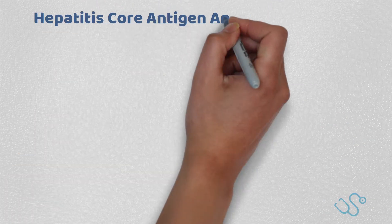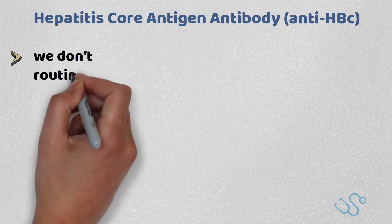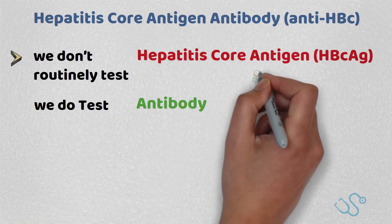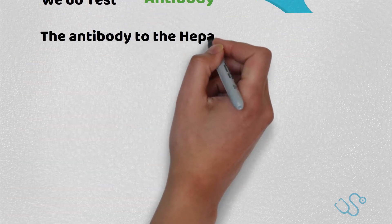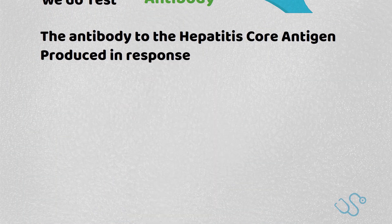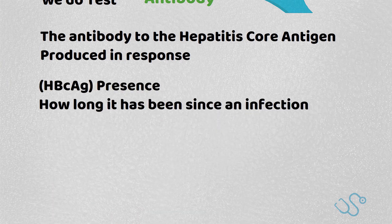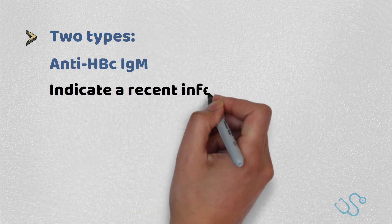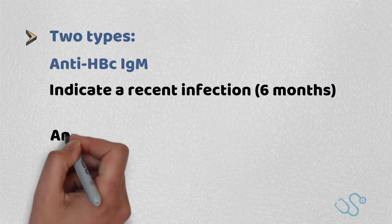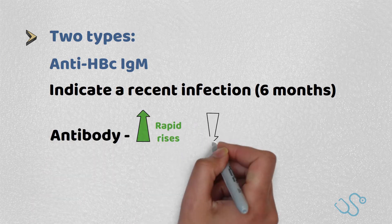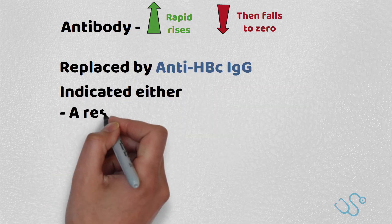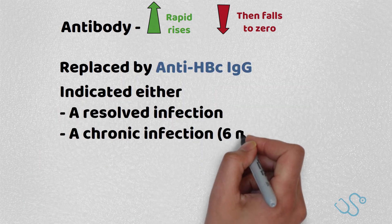Hepatitis B core antigen antibody. We don't routinely test for the Hepatitis B core antigen itself, but we do test for the antibody. Its presence determines how long it's been since an infection. The IgM antibody indicates a recent infection — less than six months — and rapidly rises then falls to zero, replaced by the IgG antibody which indicates either a resolved or chronic infection lasting longer than six months.